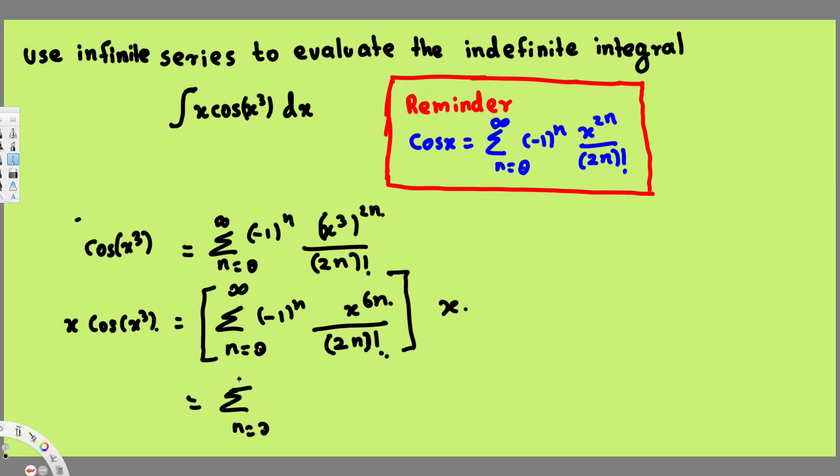So instead of writing like this, we can combine these two together and write it as: summation n equals 0 to infinity, (-1)^n, x^(6n+1) over (2n)!. Now we have found this pattern.